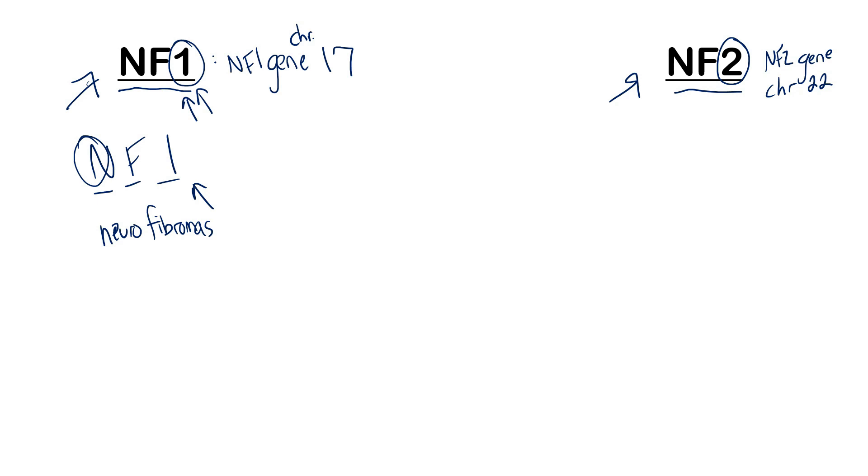Specifically in NF1, these are cutaneous neurofibromas on the skin. Now let's look at what the letter F stands for. In NF1, F stands for freckles. One of the things you'll see in neurofibromatosis type 1 is freckles, specifically in the axillary and inguinal region. They'll have freckles there along with these neurofibromas all over their skin.